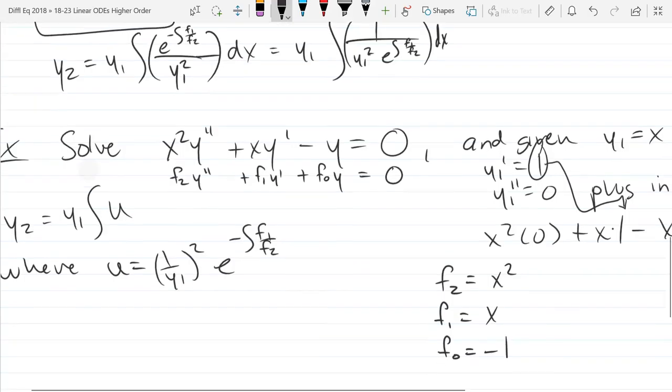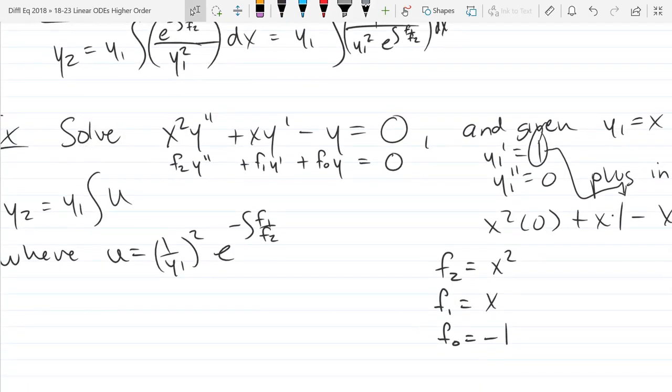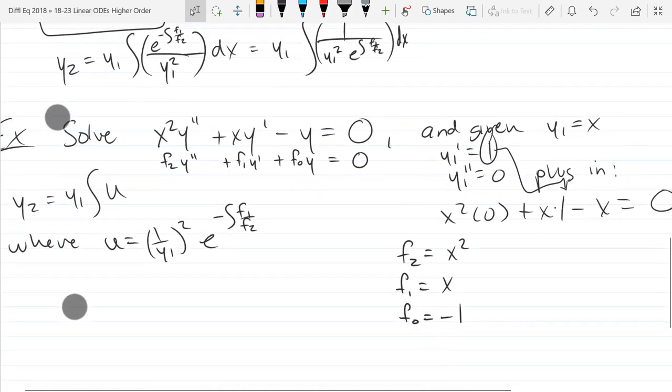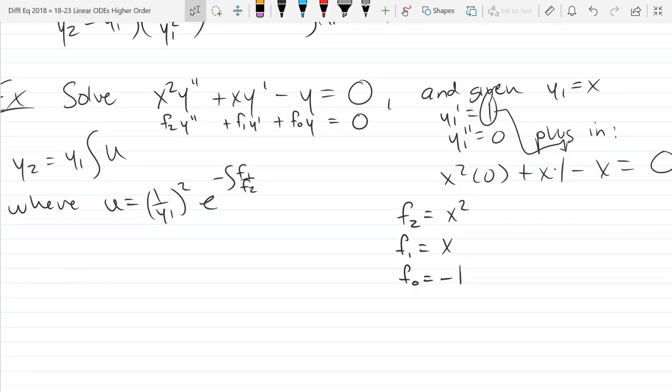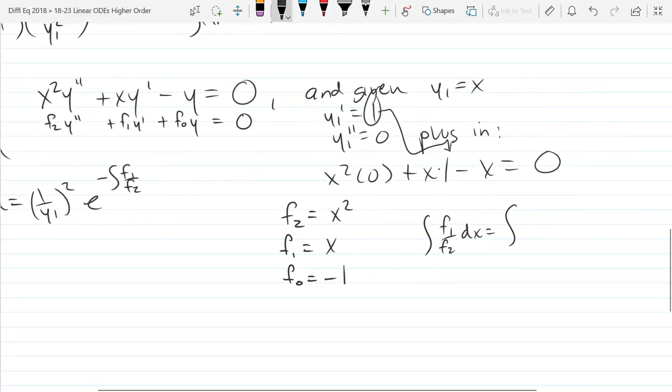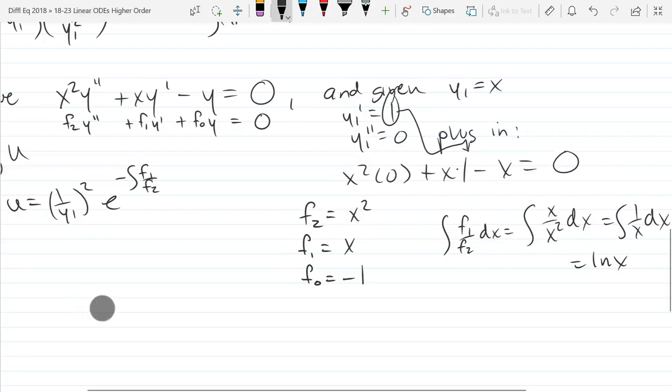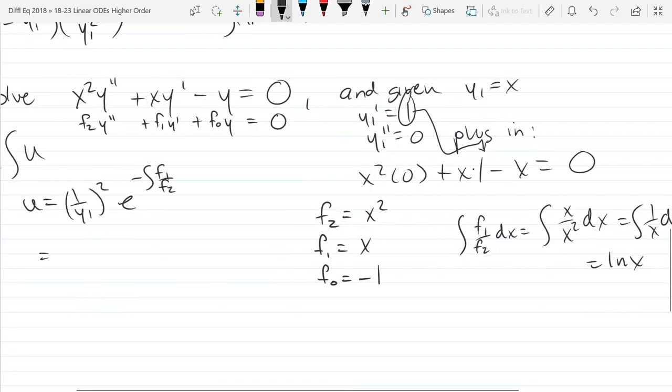Any questions on determining f2, f1, and f0? All we're going to do is f1 over f2 and then integrate that. f1 over f2, that's x over x squared dx. Integral 1 over x dx equals ln x. So that was pretty painless.